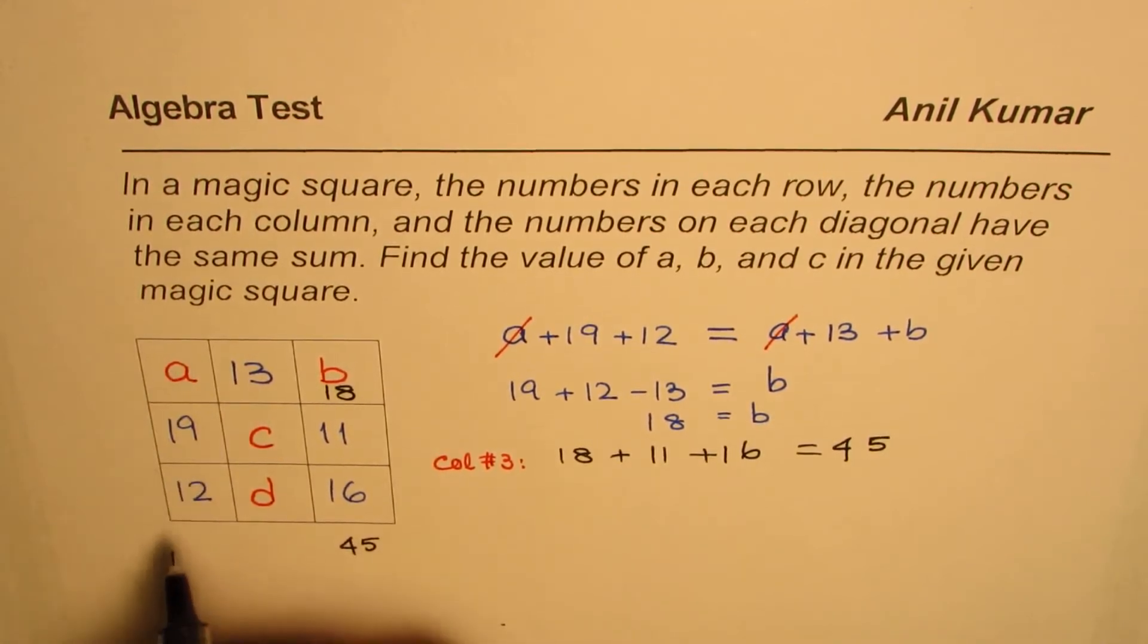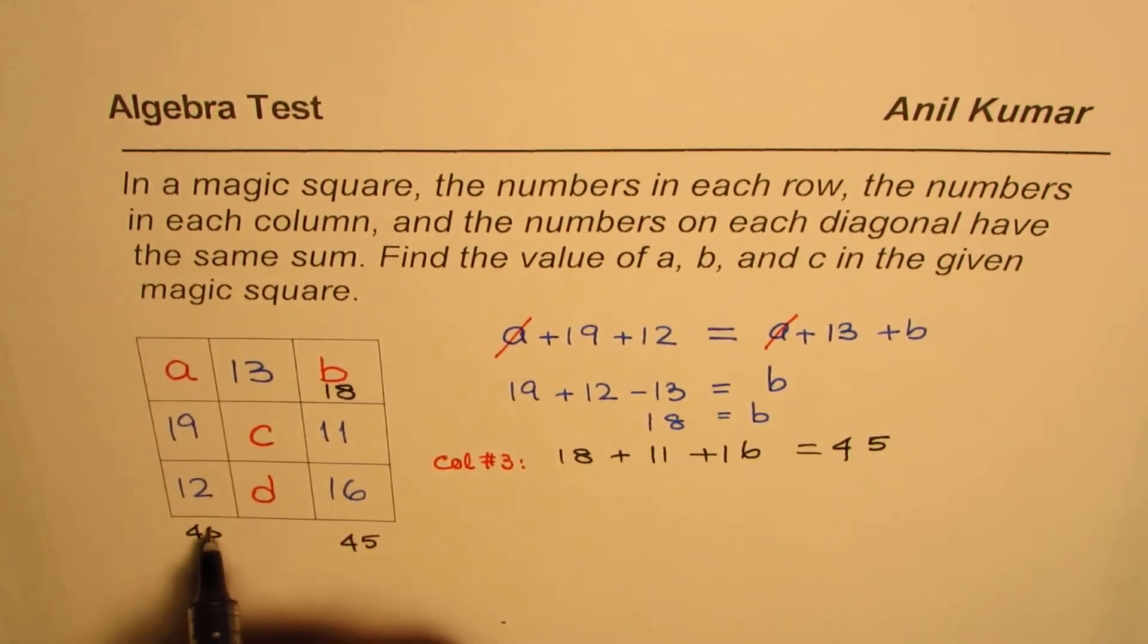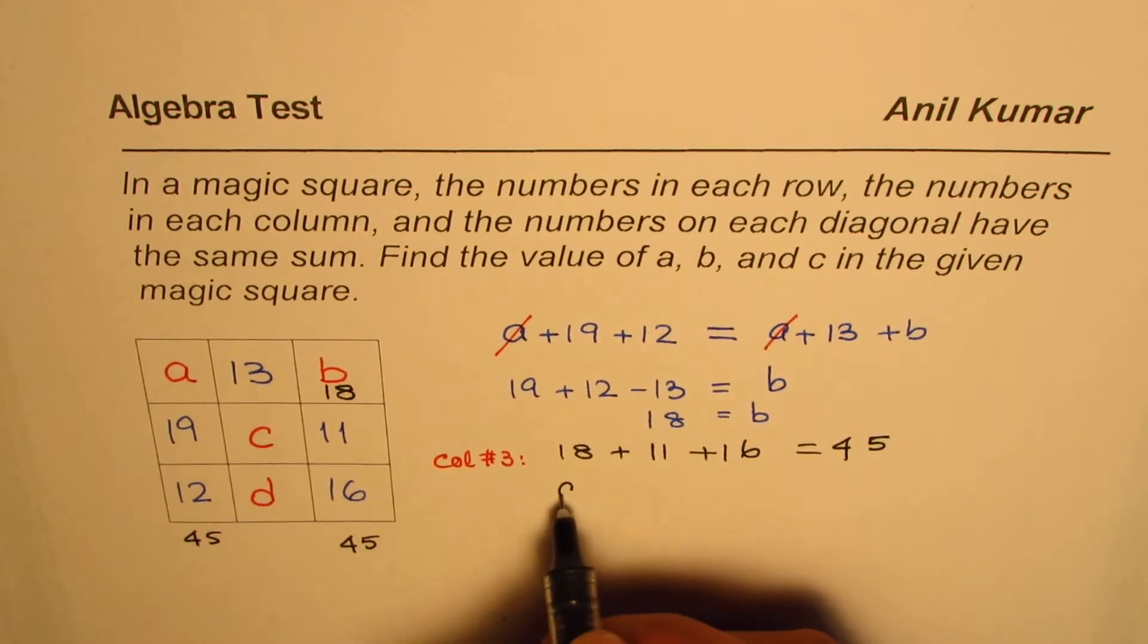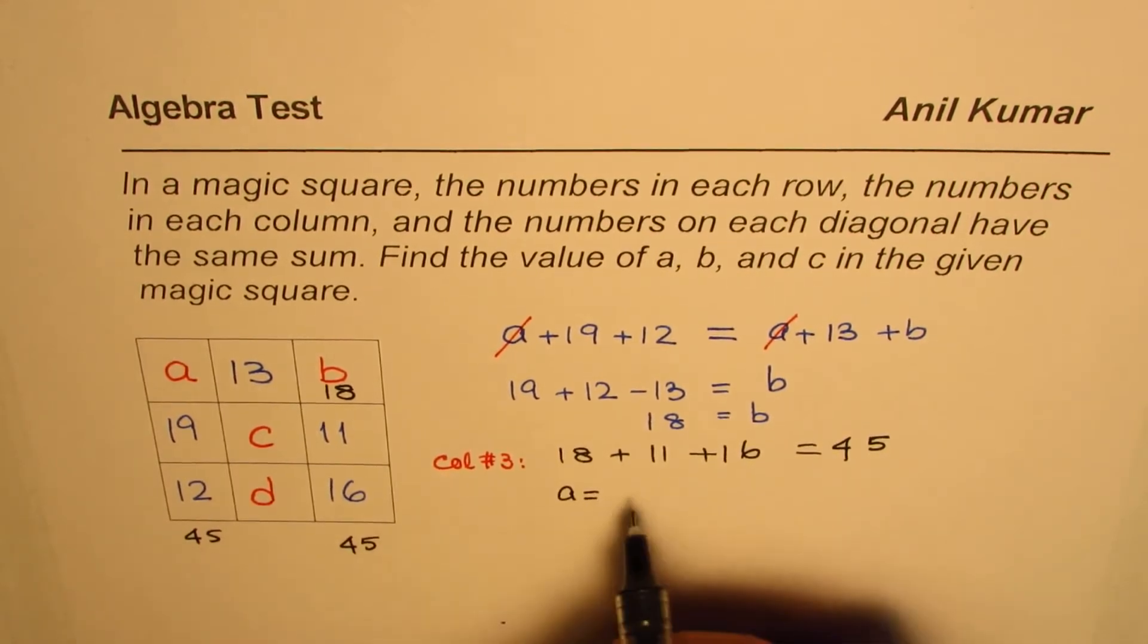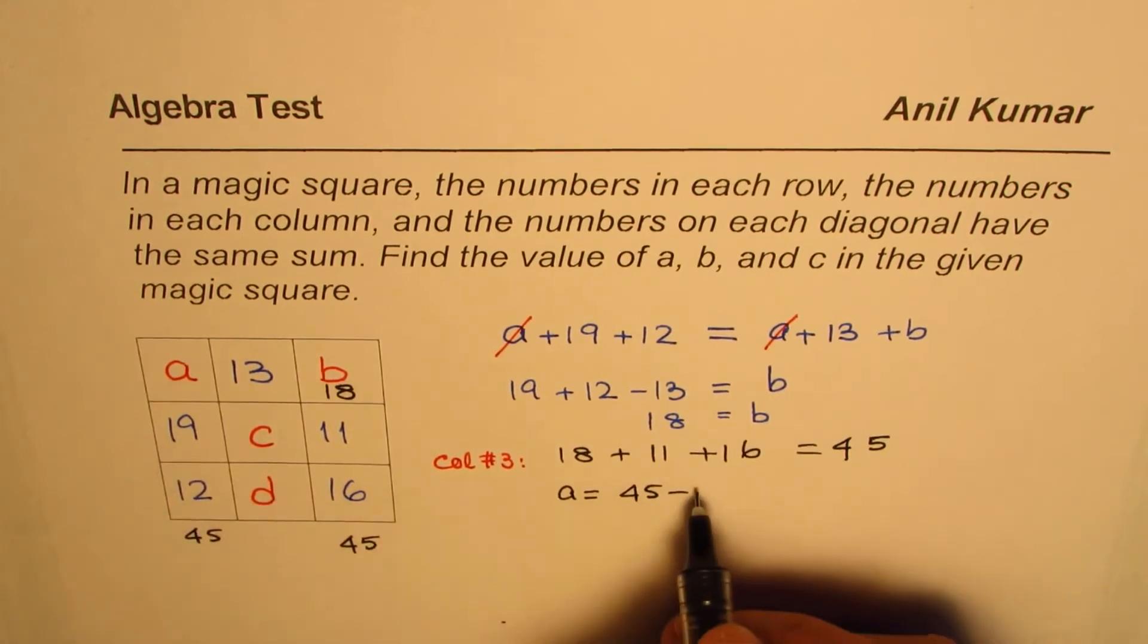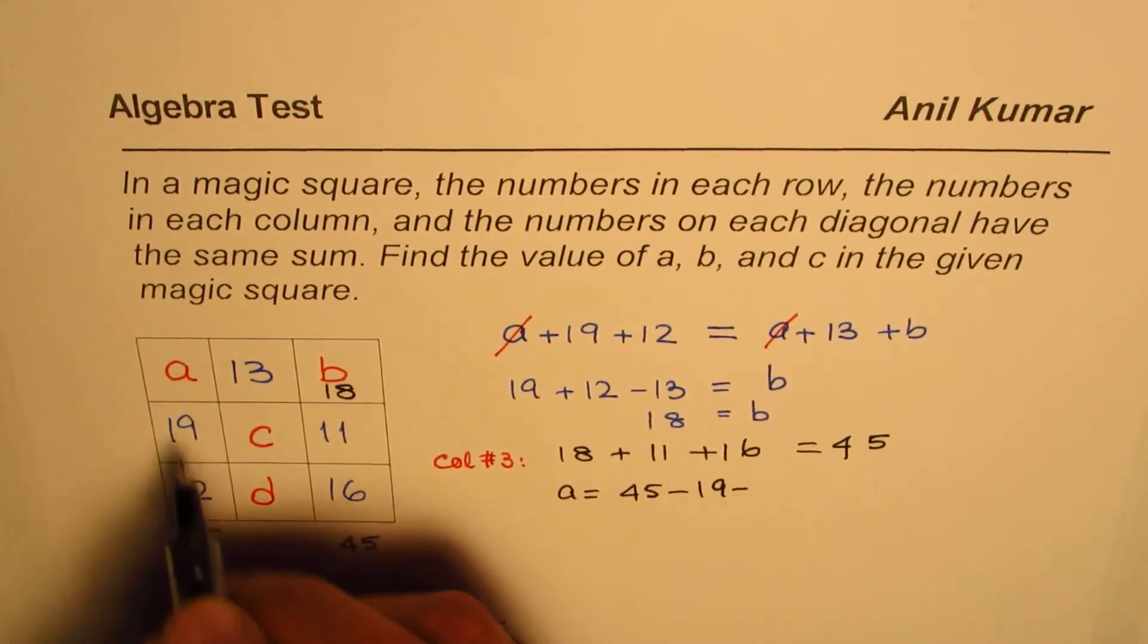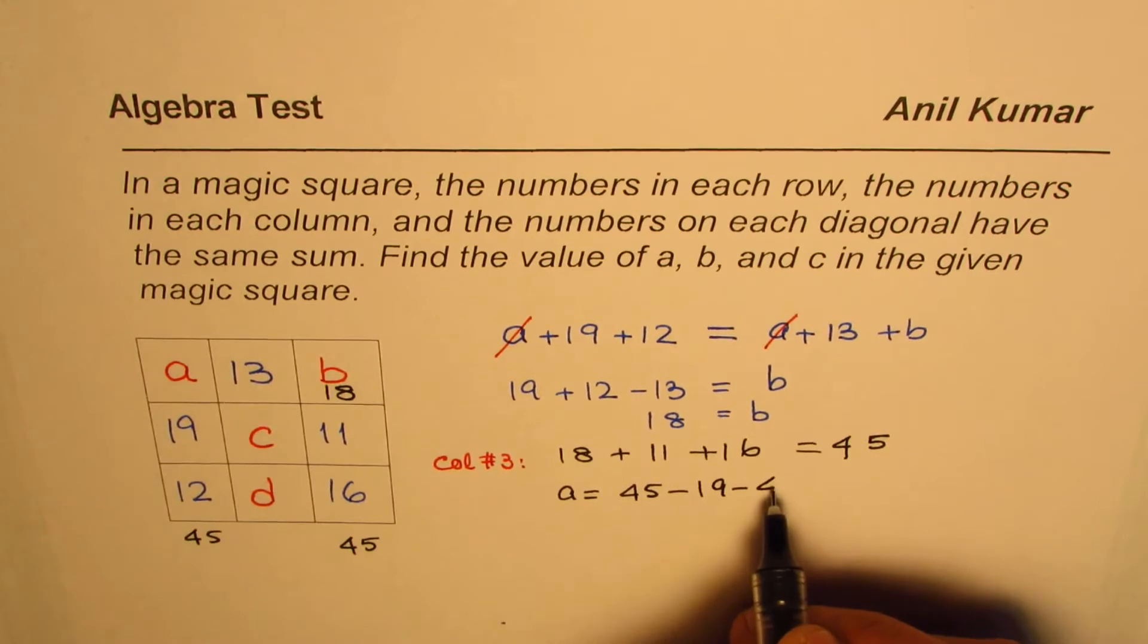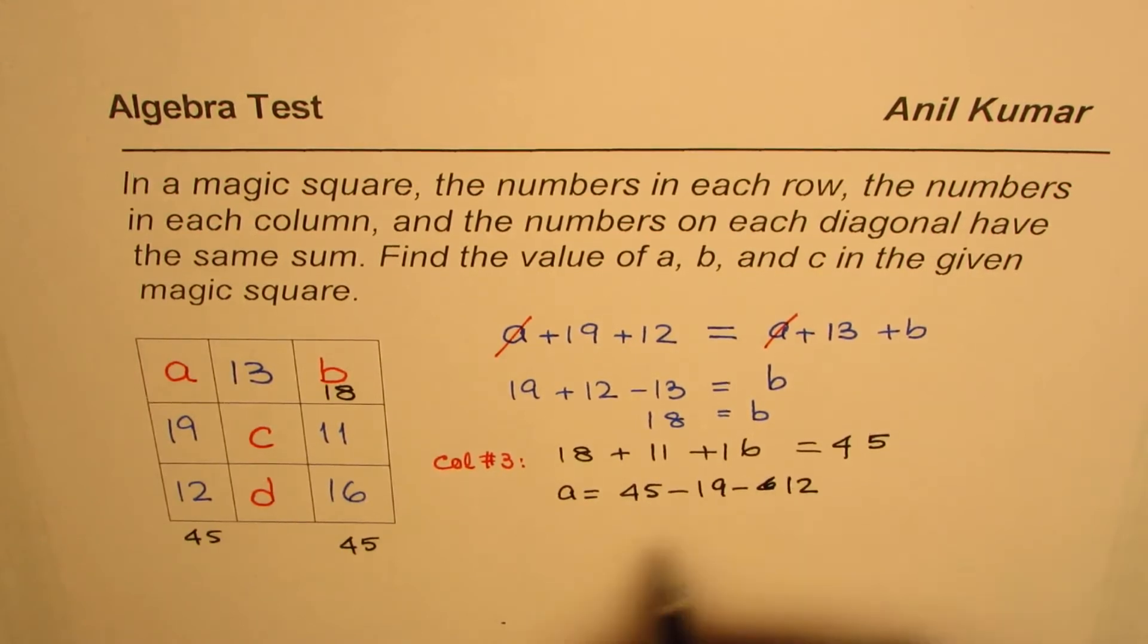We know the sum should be 45. Therefore, A should be equal to 45, take away 19, take away 12. Since the sum is 45, that gives us the value of A.